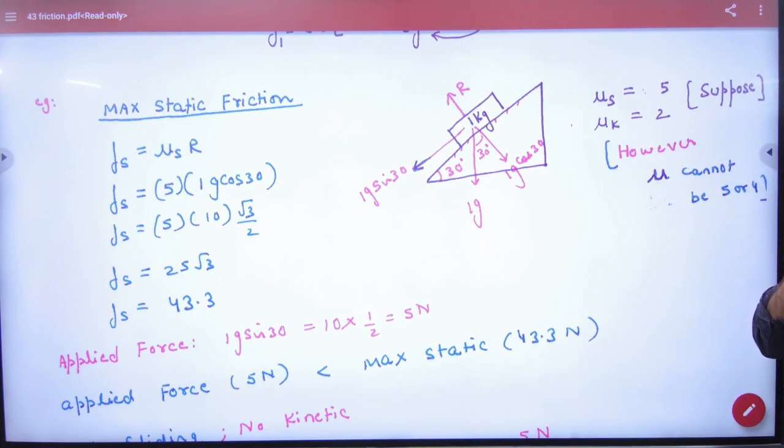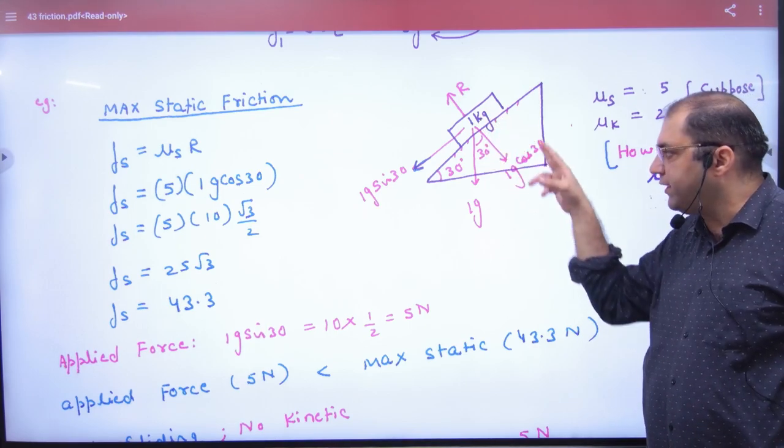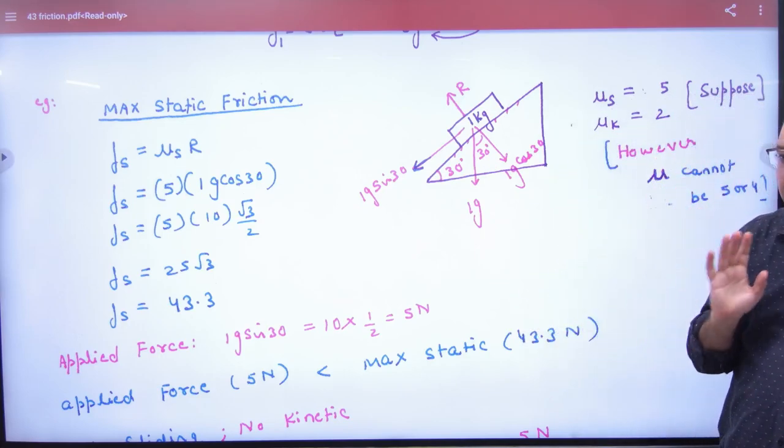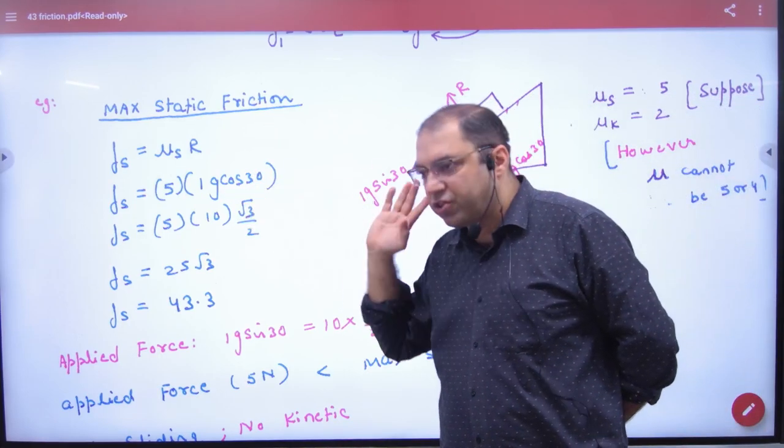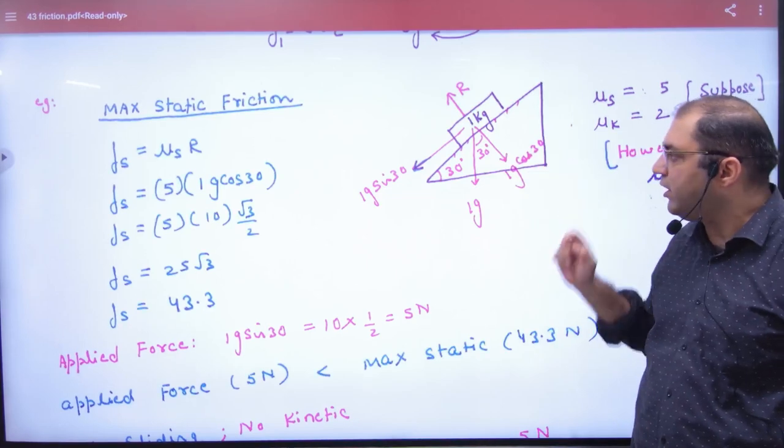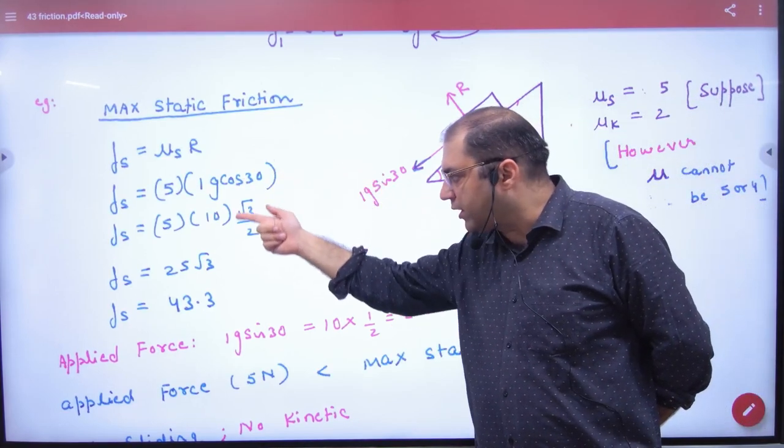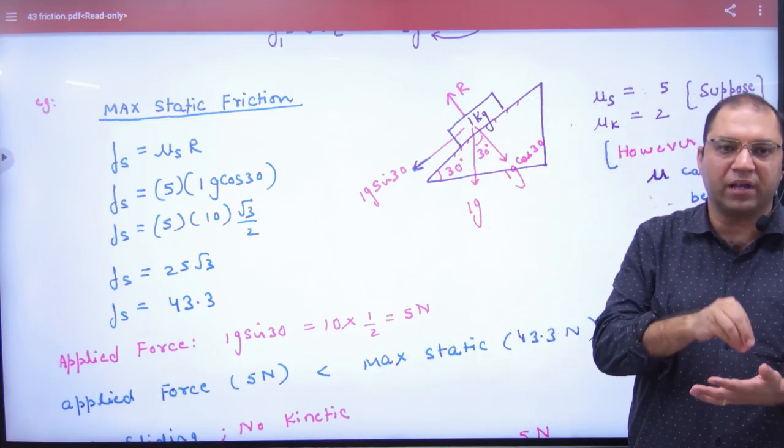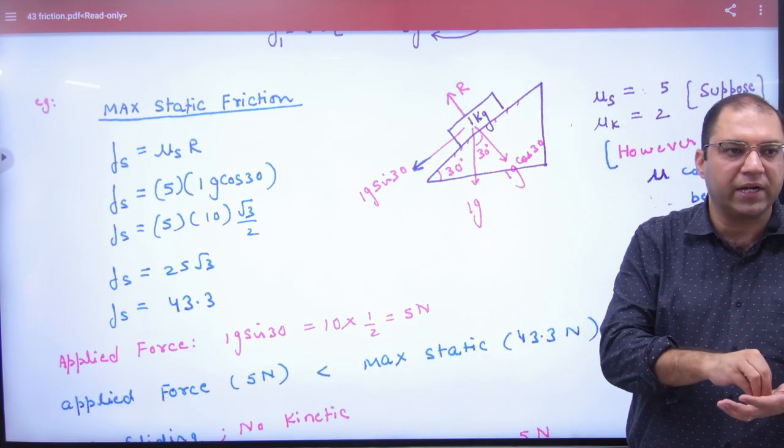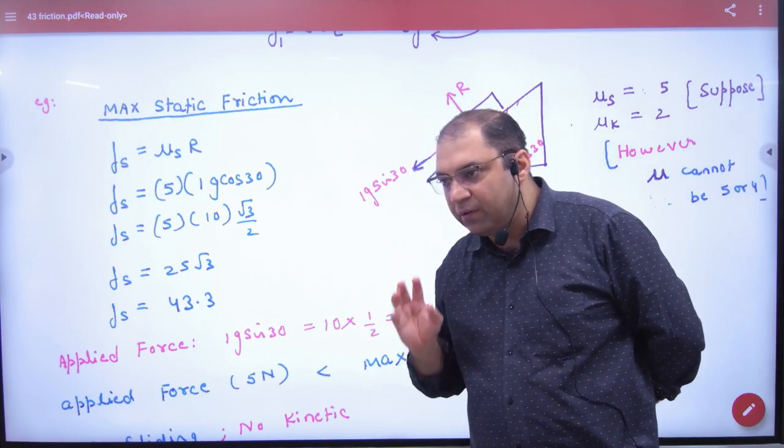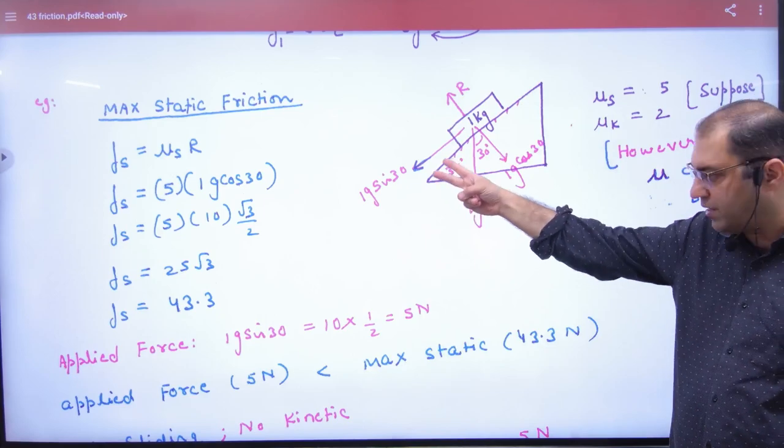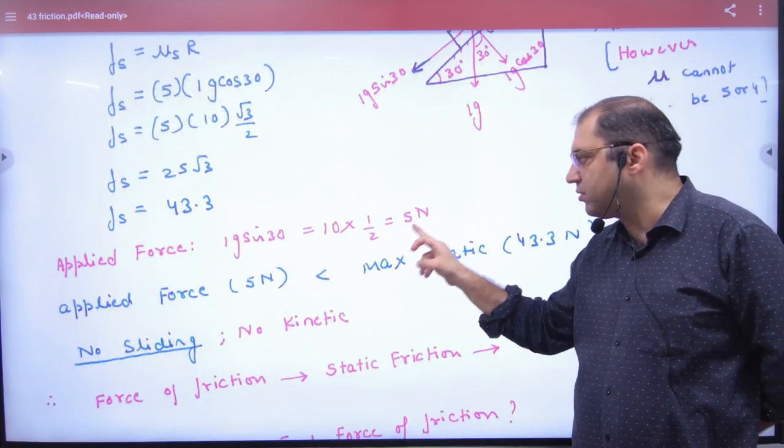Which forces will be on the body? Mg, mg cos theta, mg sin theta. So 1g sin 30. So what is the value of force of friction? Mu s into normal reaction. And what will be normal reaction? 1g cos 30. Solved, the answer is 43.3. For this body, maximum static friction, what do you need? 43.3. But which force on the body? 1g sin 30. So the answer is 5 N.